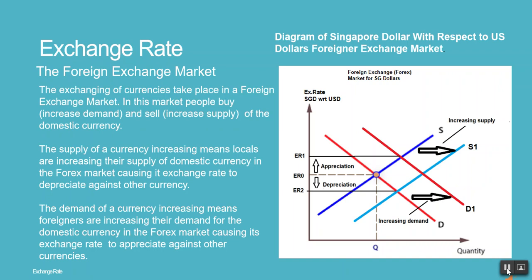In this market, people buy and sell the domestic currency. The supply of a currency increasing means locals are increasing their supply of domestic currency in the forex market, causing its exchange rate to depreciate against other currencies. The demand of a currency increasing means foreigners are increasing their demand for the domestic currency in the forex market, causing its exchange rate to appreciate against other currencies.